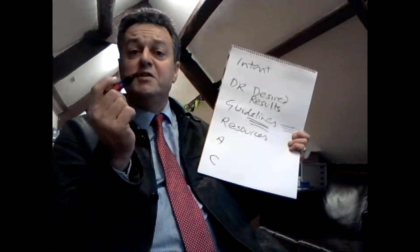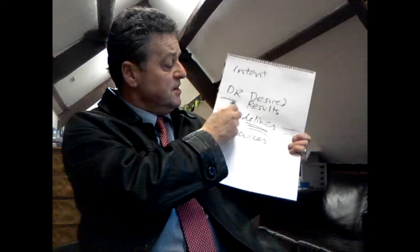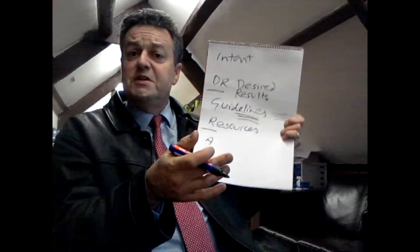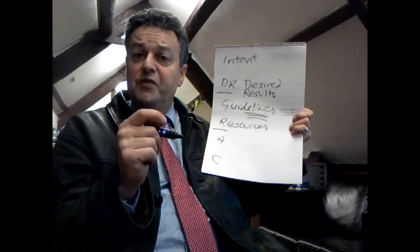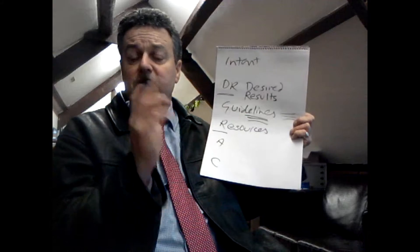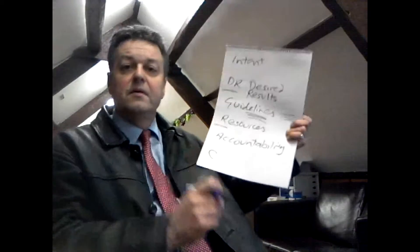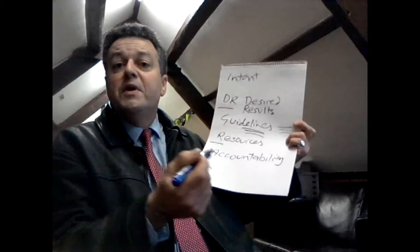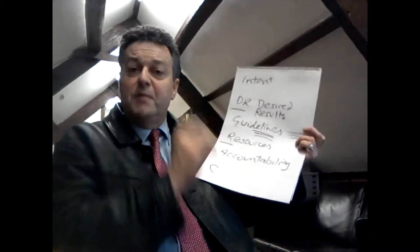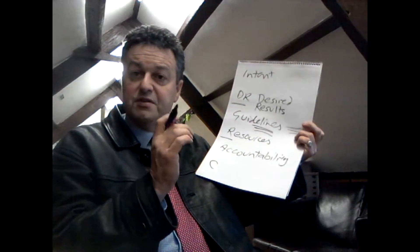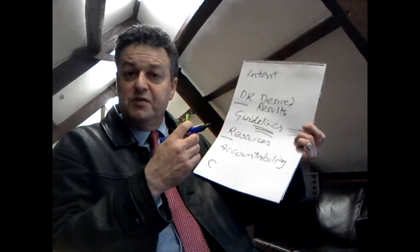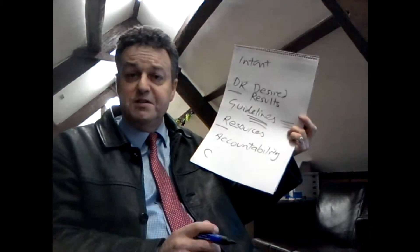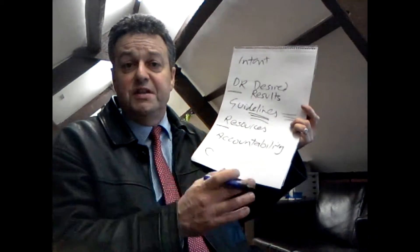Most meetings would now stop. Most meetings wouldn't do intent or desired results — they'd just do guidelines and resources, and then stop and say 'meeting's finished.' But in your experience, how often do things actually get done that have been agreed? Not very often. And the reason is people don't do ANC. A is Accountability — how are we going to be held accountable to each other? When are we going to meet? What measures are we going to use? Ask them for their idea of accountability. Then it's their plan and they'll be committed to it.